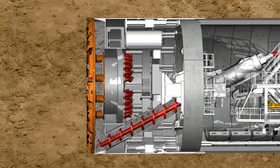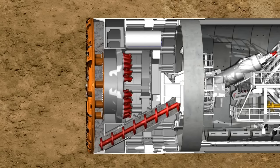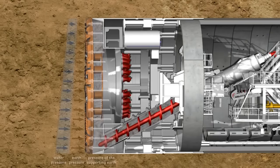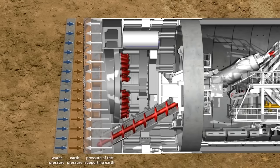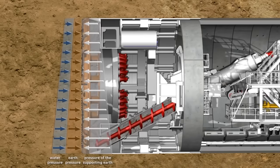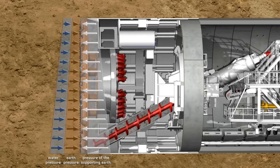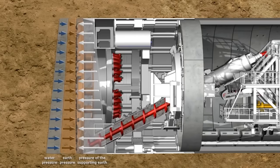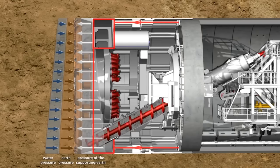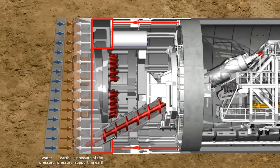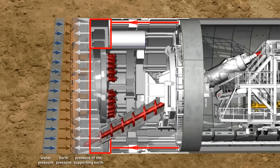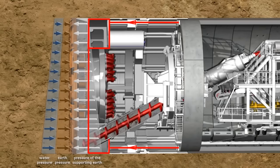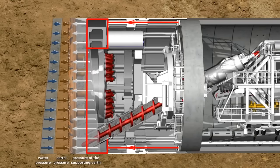For shield tunneling in non-stable soils, a loss in stability at the tunnel face is compensated by creating a support pressure. In the case of the earth pressure balance shield, the soil which was excavated by the cutting wheel is used to support the tunnel face. In order to reach a state of equilibrium, the support pressure is transferred by the hydraulic cylinders via the bulkhead to the soil, which avoids an uncontrolled penetration.